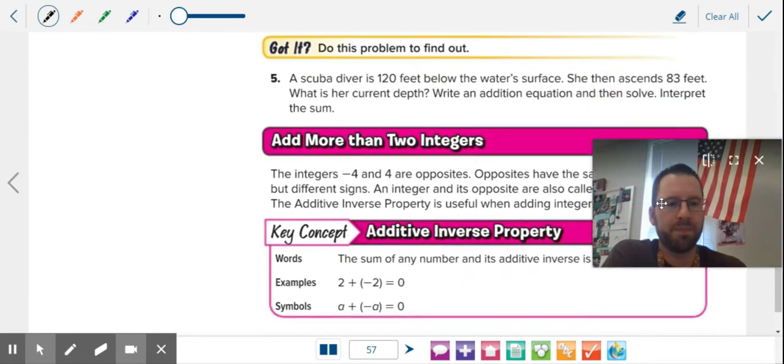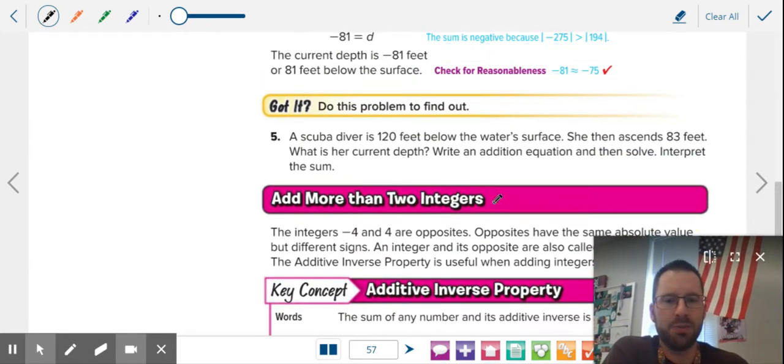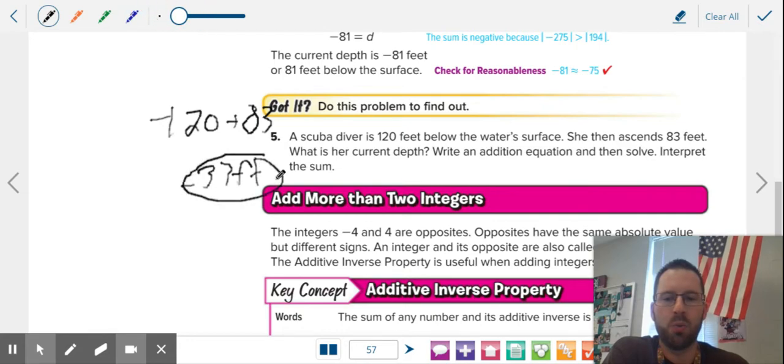Let's look at a word problem. So we have a scuba diver is a hundred twenty feet below the surface of the water. Then, she ascends eighty-three feet. What's her current depth? So we have opposing sides. One's negative, one's positive. The negative is a greater amount. We subtract, we get thirty-seven. So she's still thirty-seven feet below the water.